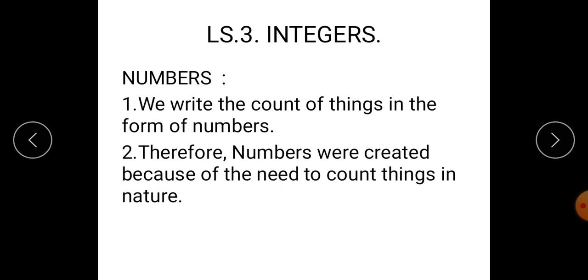Now what is the exact meaning of the numbers? We write the count of things in the form of numbers. For example, I have asked first question how many bananas are there in one dozen? 12 bananas. Sachin has to score century means how many runs exactly he has to score. The answer is 100 runs.